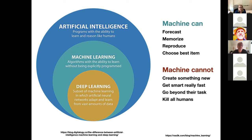Machines can forecast, memorize, reproduce, and choose best items. But they are only as good as the programmer and the data going into them. There are real ethical considerations when talking about machine learning — about the data going in, how outputs are interpreted, and how they're applied. That can have dramatic ethical consequences, so we need to remember the ethical part and what biases we're adding when we let the machine learn.